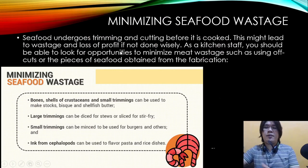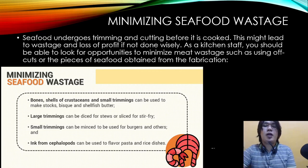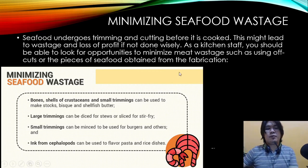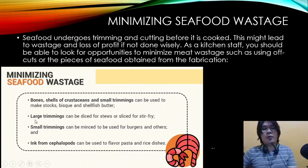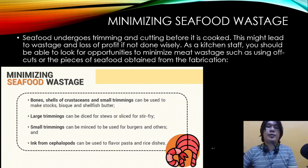Minimizing seafood wastage: seafood undergoes trimming and cutting before it is cooked, which may lead to wastage and loss of profit if not done wisely. As a kitchen staff or chef, look for opportunities to minimize waste by using cuts and pieces obtained from fabrication. Bones, shells of crustaceans, and small trimmings can be used to make stocks, bisques, and shellfish butter. Large trimmings can be diced for stews or sliced for stir-fry. Small trimmings can be used for burgers and other dishes — for example, salmon trimmings for salmon burgers. Ink from cephalopods can be used to flavor pasta and rice dishes.